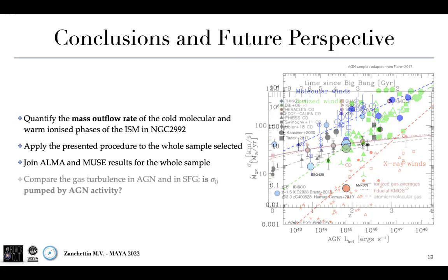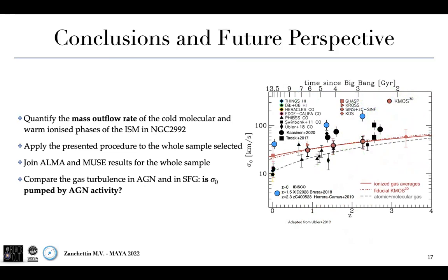We also want to compare the gas turbulence in AGN and in star-forming galaxies, and try to understand if the sigma-zero parameter is enhanced by the AGN activity. Here is a plot of sigma-zero as a function of redshift, adapted from Übler et al. 2019, where the blue dots correspond to AGNs. Thank you for the attention.